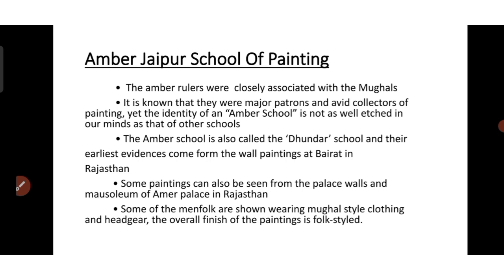In the previous video, we discussed about the Regional School of Painting. Regional School of Painting can be classified into two types: Rajasthani School of Painting and Pahari School of Painting. In the last video we dealt with the Rajasthani School of Painting, which has sub-genres: Mewer School, Amber Jaipur School, and Marwar School. In this video, we will be discussing the Amber Jaipur School of Painting.